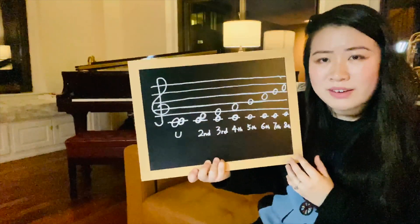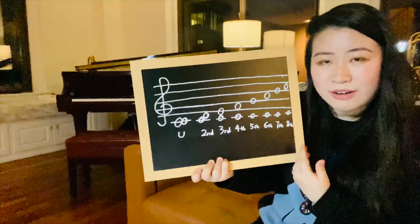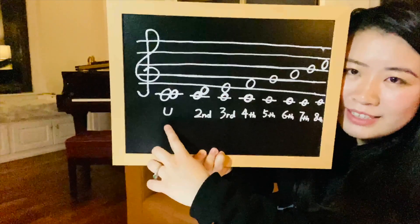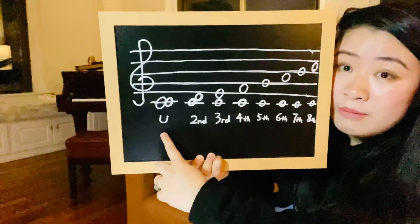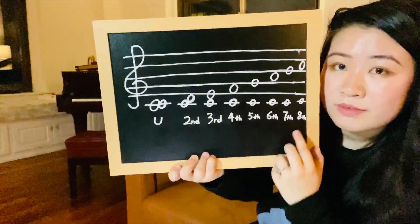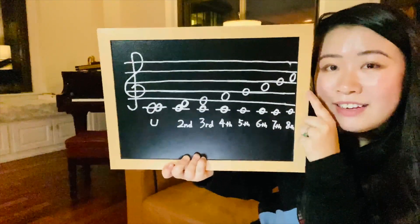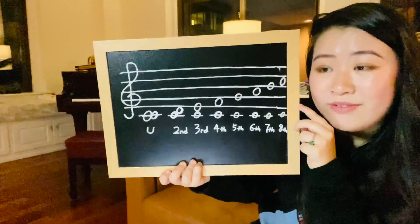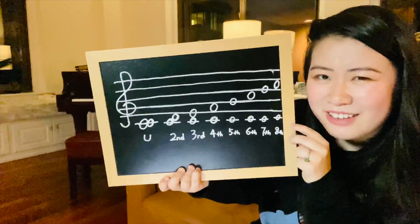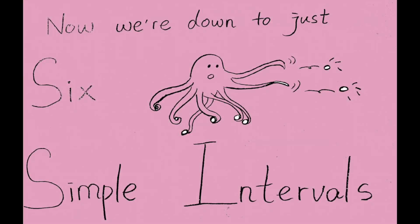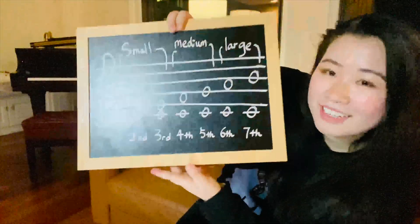In fact, you don't even really have to learn how to identify all eight of these. Everyone knows what a unison is — if the two notes are the same note, that's a unison. You also don't really have to learn how to identify an octave, because if the two notes have the same letter name, that's an octave. So I'm just going to take out these two easy ones. Let's not waste time on them. And that leaves us with six different sizes to identify.